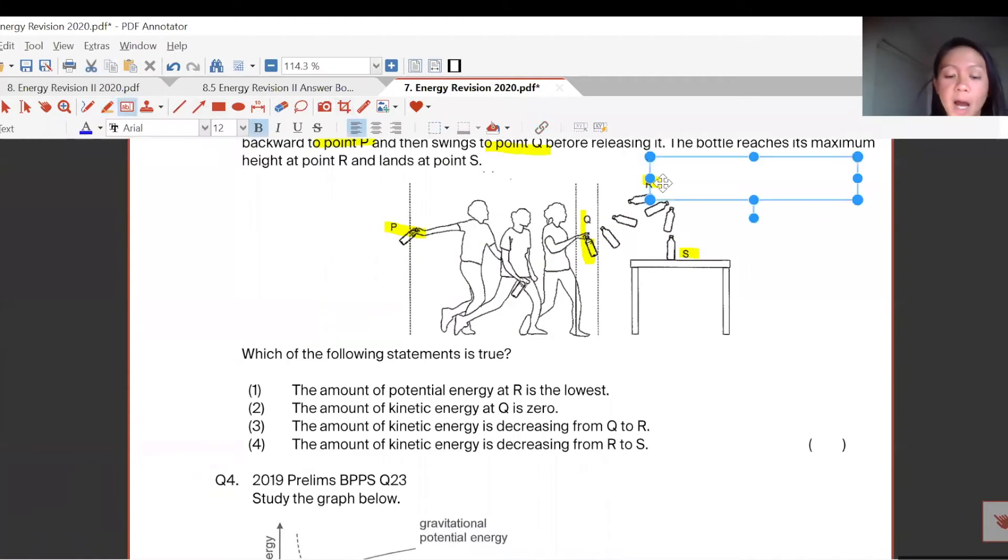R is so high up. High up means you have the most GPE. Remember, it's height, so highest height means highest GPE.